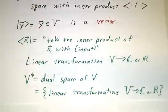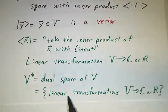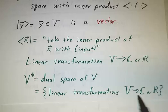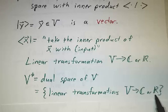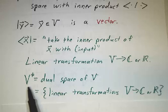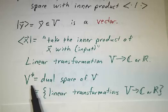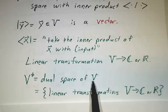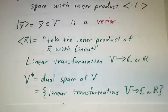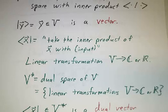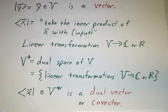The dual space to a vector space is the set of all linear transformations from V to the scalars, where scalars mean complex for complex vector spaces and reals for real vector spaces. This is a vector space in its own right - you can add two linear transformations or multiply a linear transformation by a scalar. It's a perfectly good vector space, but it's not V, it's a different vector space. This is where the bras live. The elements are called dual vectors or sometimes co-vectors.